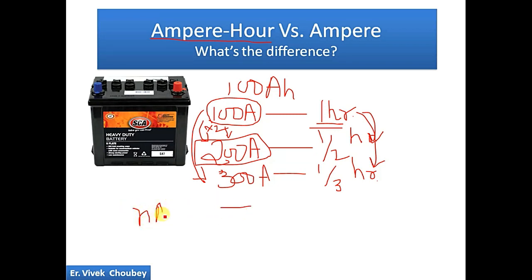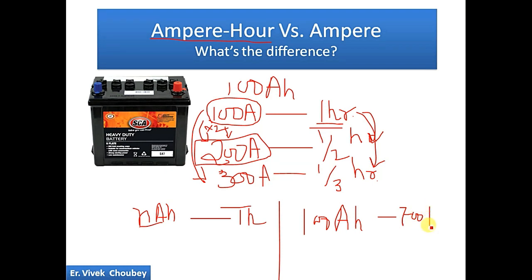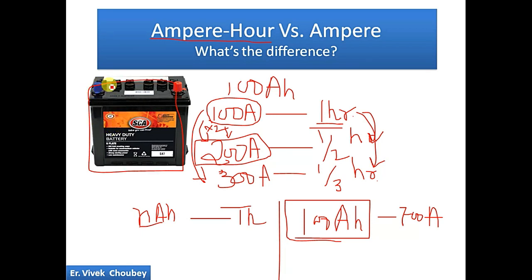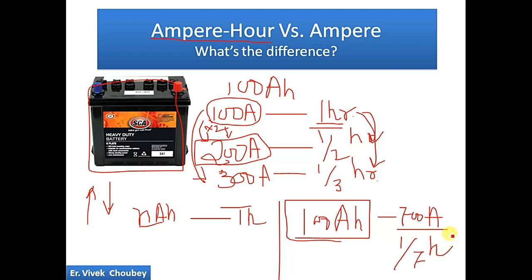If we take a battery of N ampere-hour, it means the battery is capable of supplying N amps of current for one hour. Many people have confusion: how can a battery written as 100 ampere-hour give 700 amps of current? Basically it works like this — ampere-hour is a measure of the capacity of the battery. A battery is an energy storage device, so it depends on how much energy we are taking. If we take 700 amps, the battery will discharge in one-seventh of an hour.